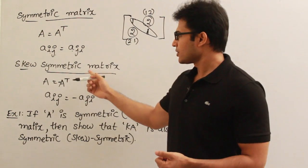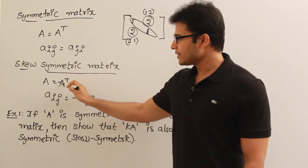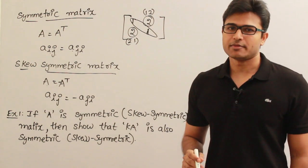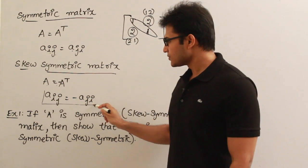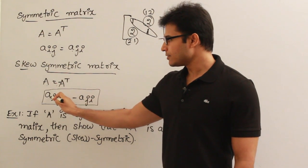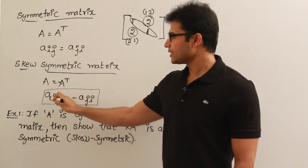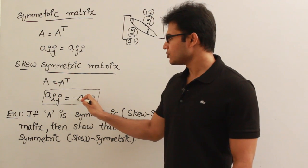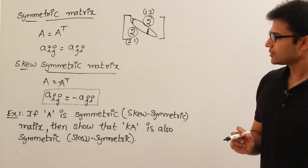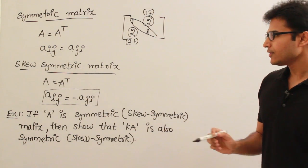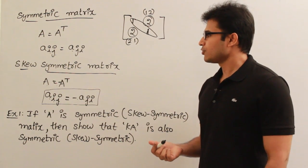Now, there is one more type of matrix, which is called a skew-symmetric matrix. If A equals minus A transpose, then such a matrix is called a skew-symmetric matrix. In terms of elements: if aᵢⱼ represents an element in the i-th row and j-th column, then for a matrix to be skew-symmetric, Aᵢⱼ should be equal to minus Aⱼᵢ. There is one important property here.